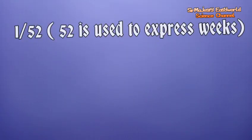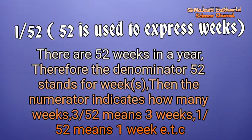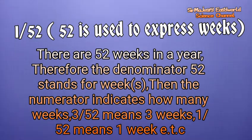What about 1 over 52? We have 52 weeks in a year, so 52 is used to express weeks. The number above tells you how many weeks you will take it. So 1 over 52 means take the medication for one week. 2 over 52 means two weeks, and 3 over 52 means three weeks. That is the duration notation for weeks.